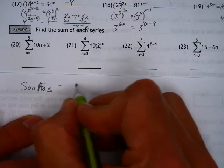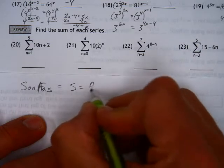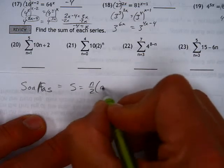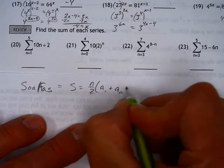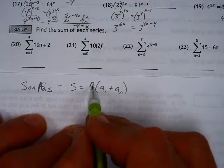The equation for that is the sum equals n over 2 times a sub 1 plus a sub n, where this is the first term and this is the last term of the series, and that's the number of terms in the series.